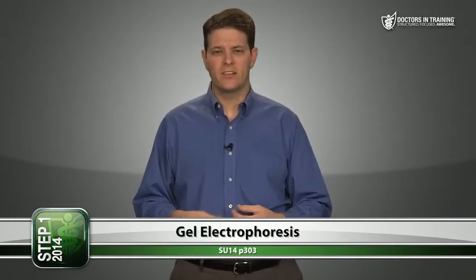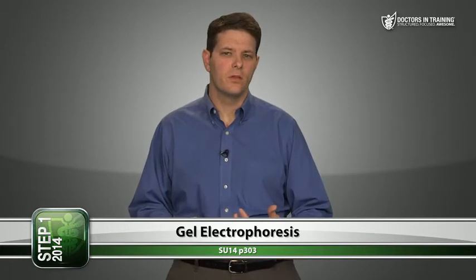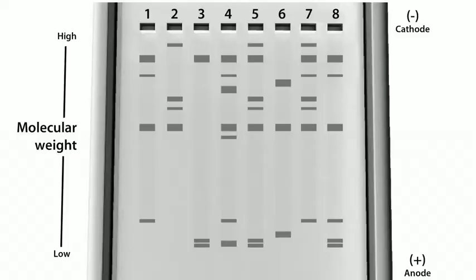Once you've amplified the DNA sequence with PCR, one of the things you can do to analyze the DNA is called gel electrophoresis. We use gel electrophoresis to sort and separate PCR products according to size. You have a tray filled with this gel, and in one end of the gel you have little divots which are called wells.